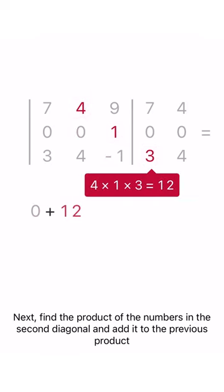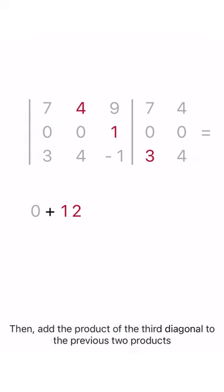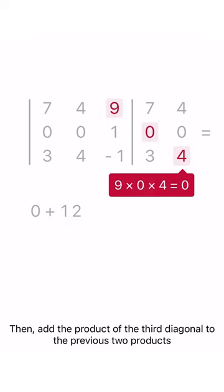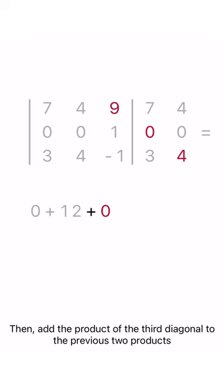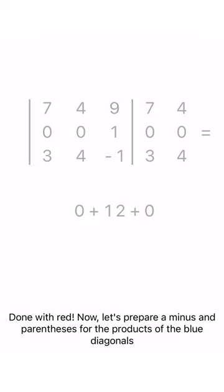Then add the product of the third diagonal to the previous two products. Done with red! Now let's prepare a minus and parentheses for the products of the blue diagonals.